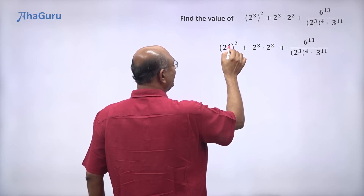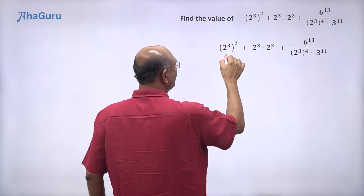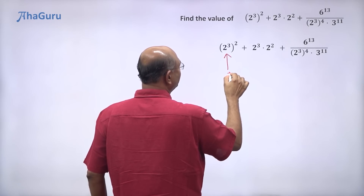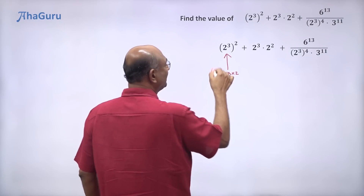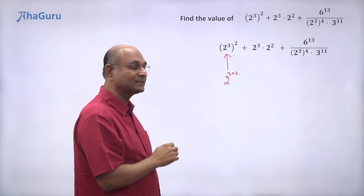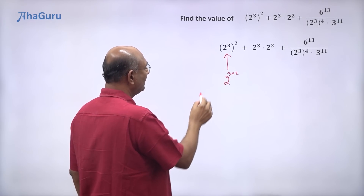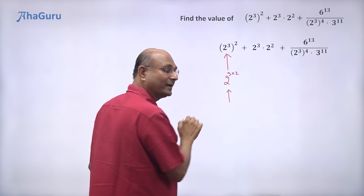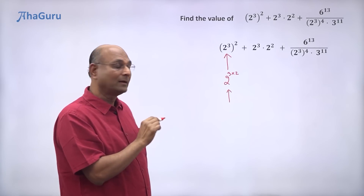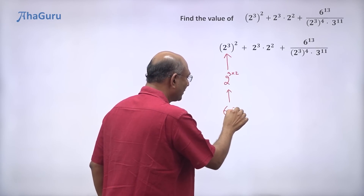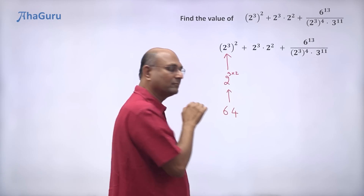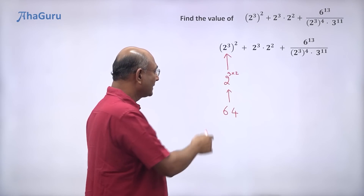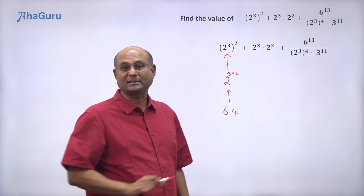First, 2 power 3 whole power 2. This is 2 to the power of 3 into 2, which is 2 to the power of 6. And 2 to the power of 6 gives us 64 — that is 2 multiplied by itself 6 times, giving 64.